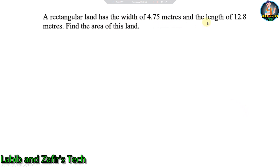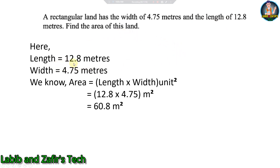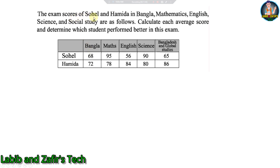Next problem: A rectangular land has a width of 4.75 meters and a length of 12.8 meters. Find the area of this land. Solution: Area = length × width = 12.8 × 4.75 = 60.8 square meters.